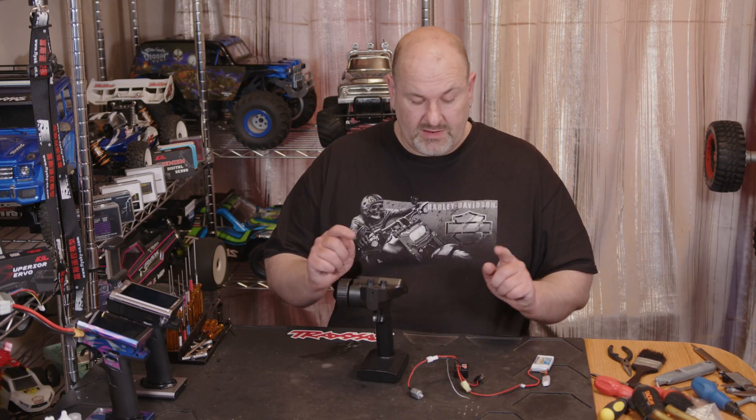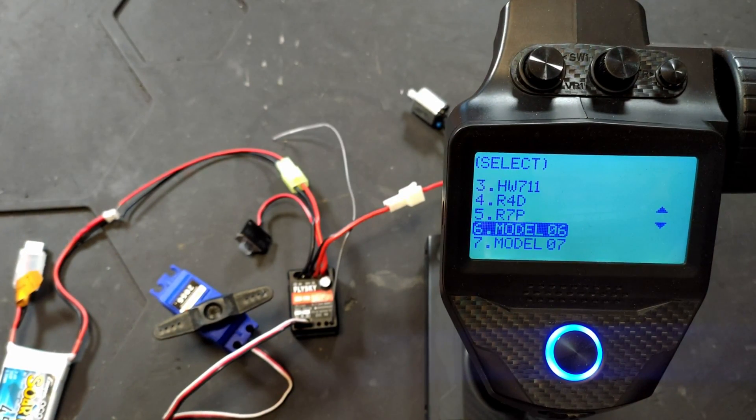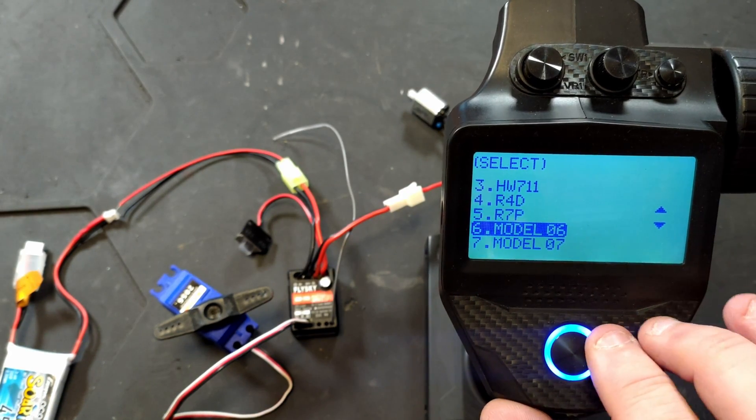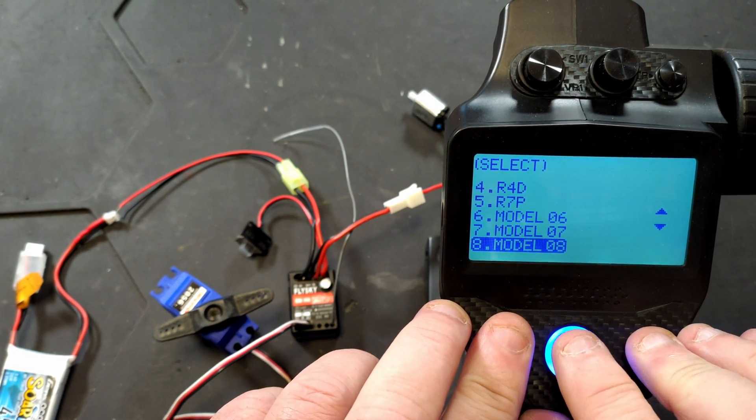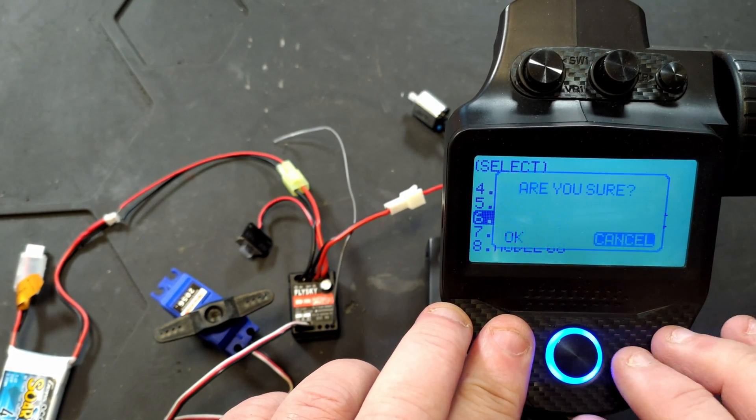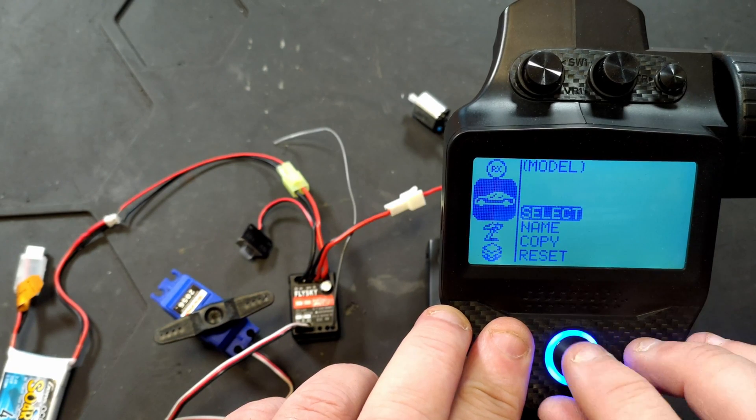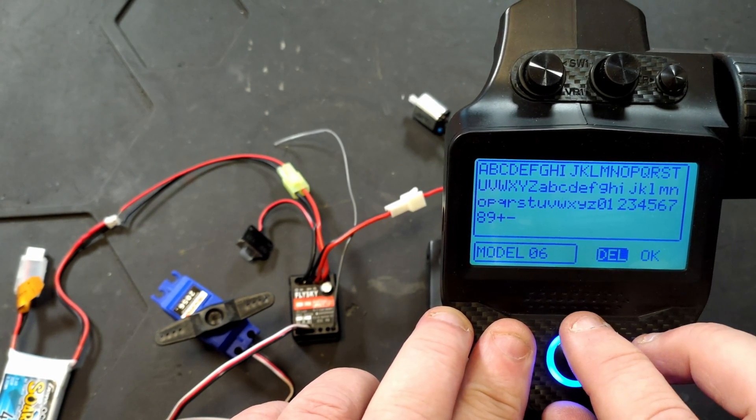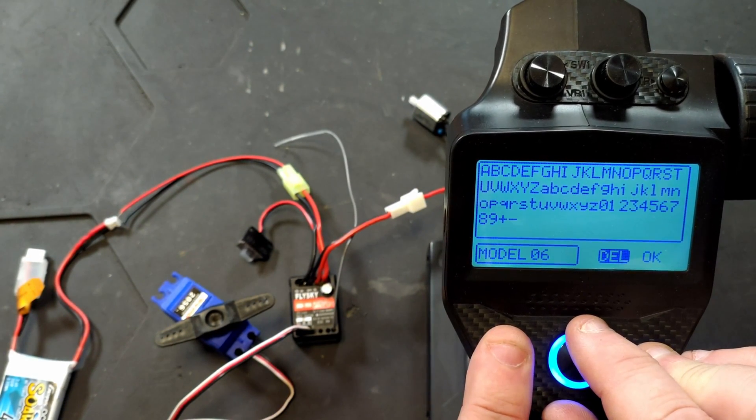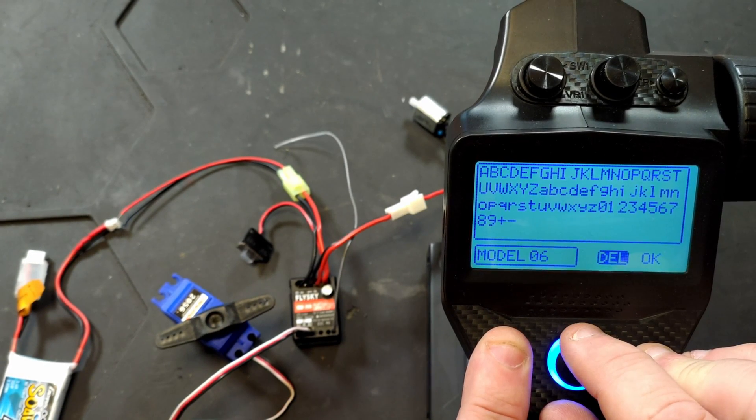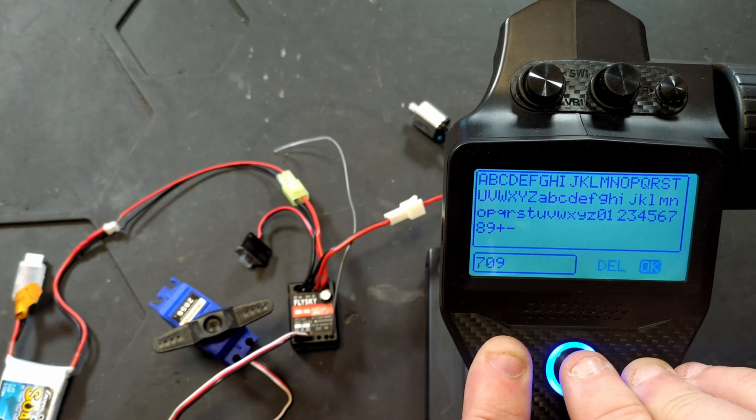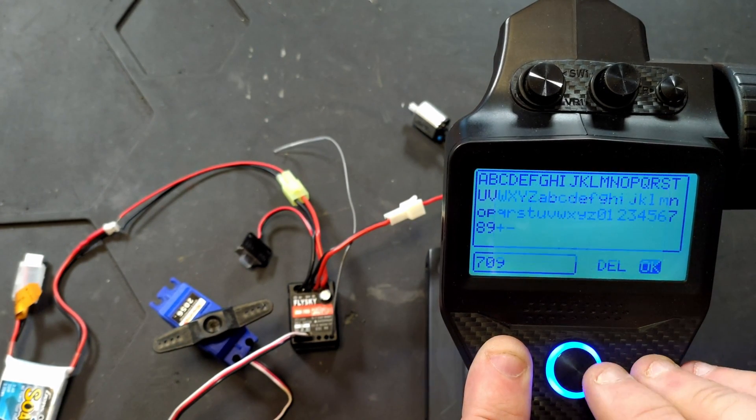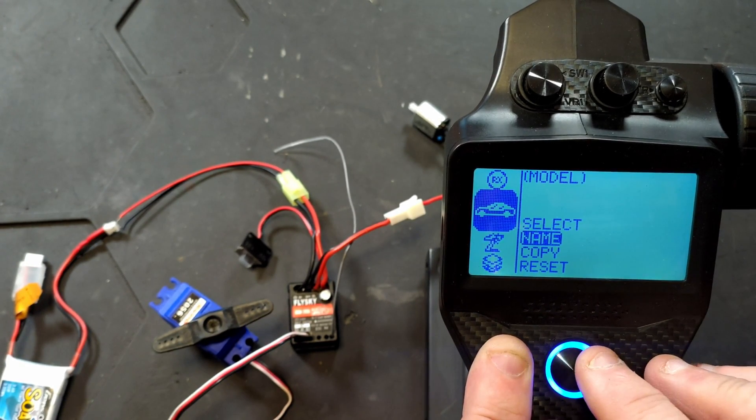So let's get in for a closer look and I'll show you how to set this one up. Right, so what you're going to want to do first off is go to your model select, select a spare model channel, then you're going to want to name it. We'll just call this 709 and then we know what it is. Once we've got that saved we can back out.